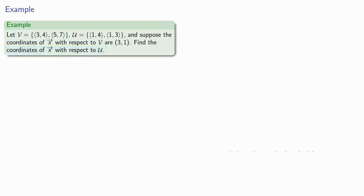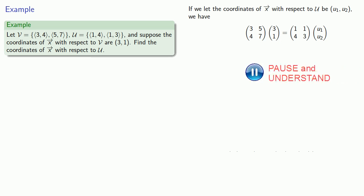So let's go ahead and try and set that up. If we have the coordinates of x with respect to U, our u1, u2, then we know that the product (3, 5; 4, 7) times (3, 1) is going to be the product (1, 1; 4, 3) times (u1, u2).